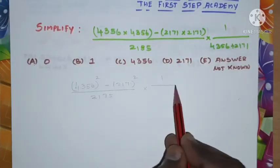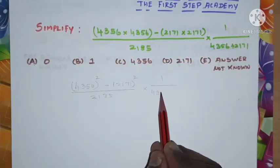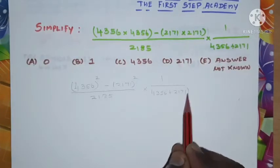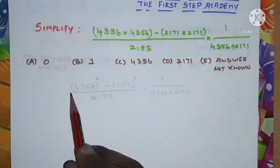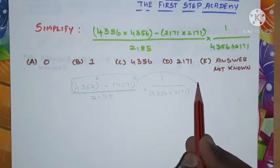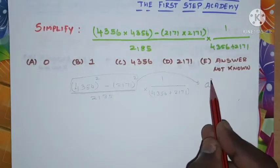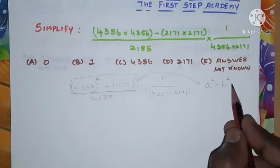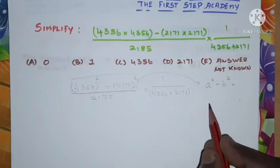Look at this numerator part. This is exactly the symbol a² - b². We know the formula a² - b² can be written as (a + b)(a - b).